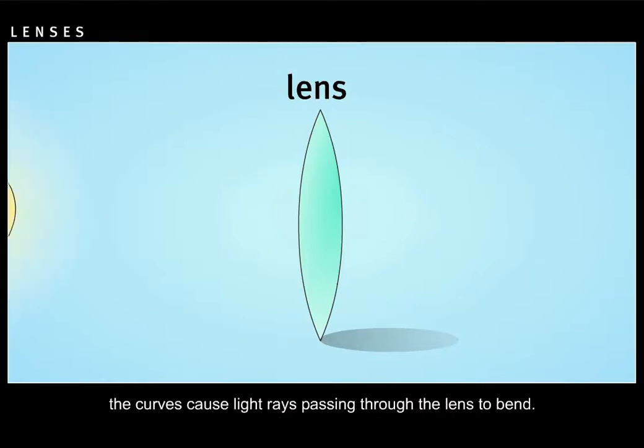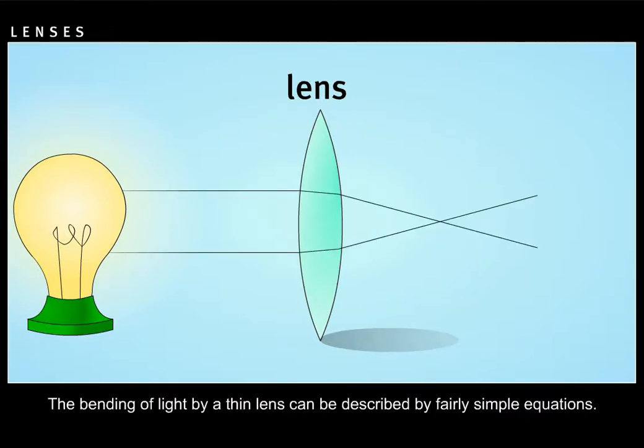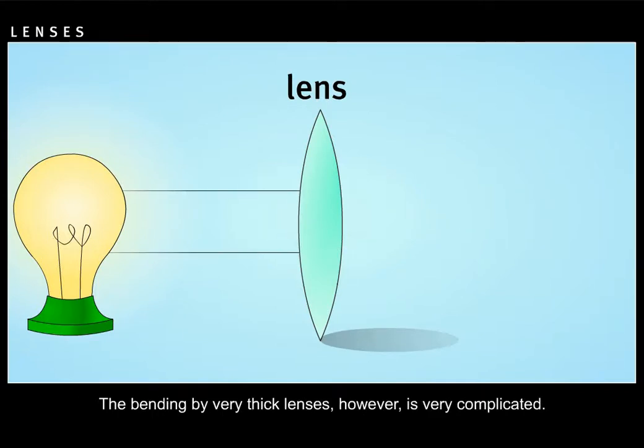The curves cause light rays passing through the lens to bend. The bending of light by a thin lens can be described by fairly simple equations. The bending by very thick lenses however is very complicated.